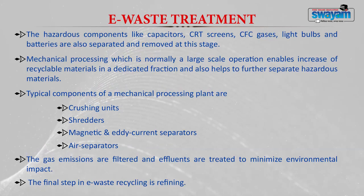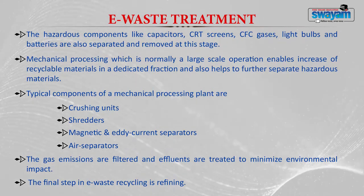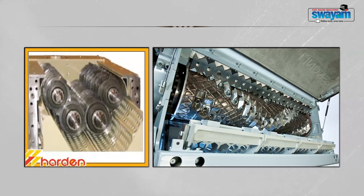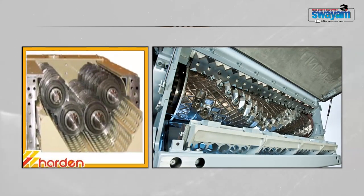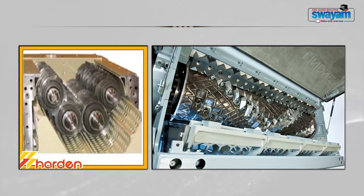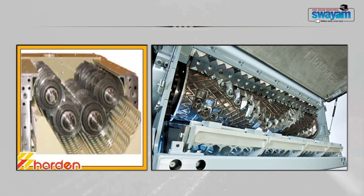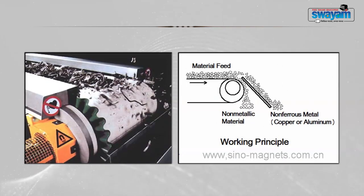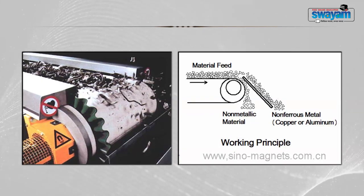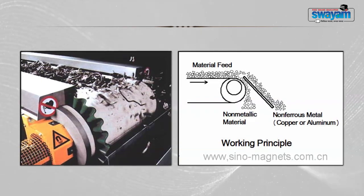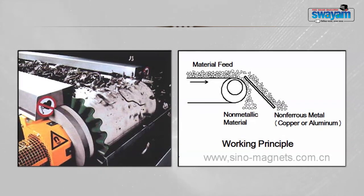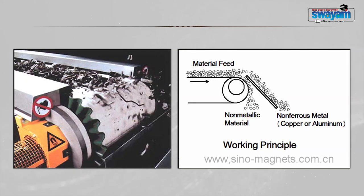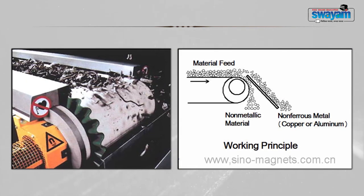The final step in e-waste management is recycling, also called refining. Photographs show crushing units with large jaws that crush items into smaller fractions. Magnetic and eddy current separators use a pulley arrangement where material travels on a conveyor belt; the pulley's magnetic field attracts metallic substances, and as the pulley turns, non-metallic and non-ferrous metals are separated.